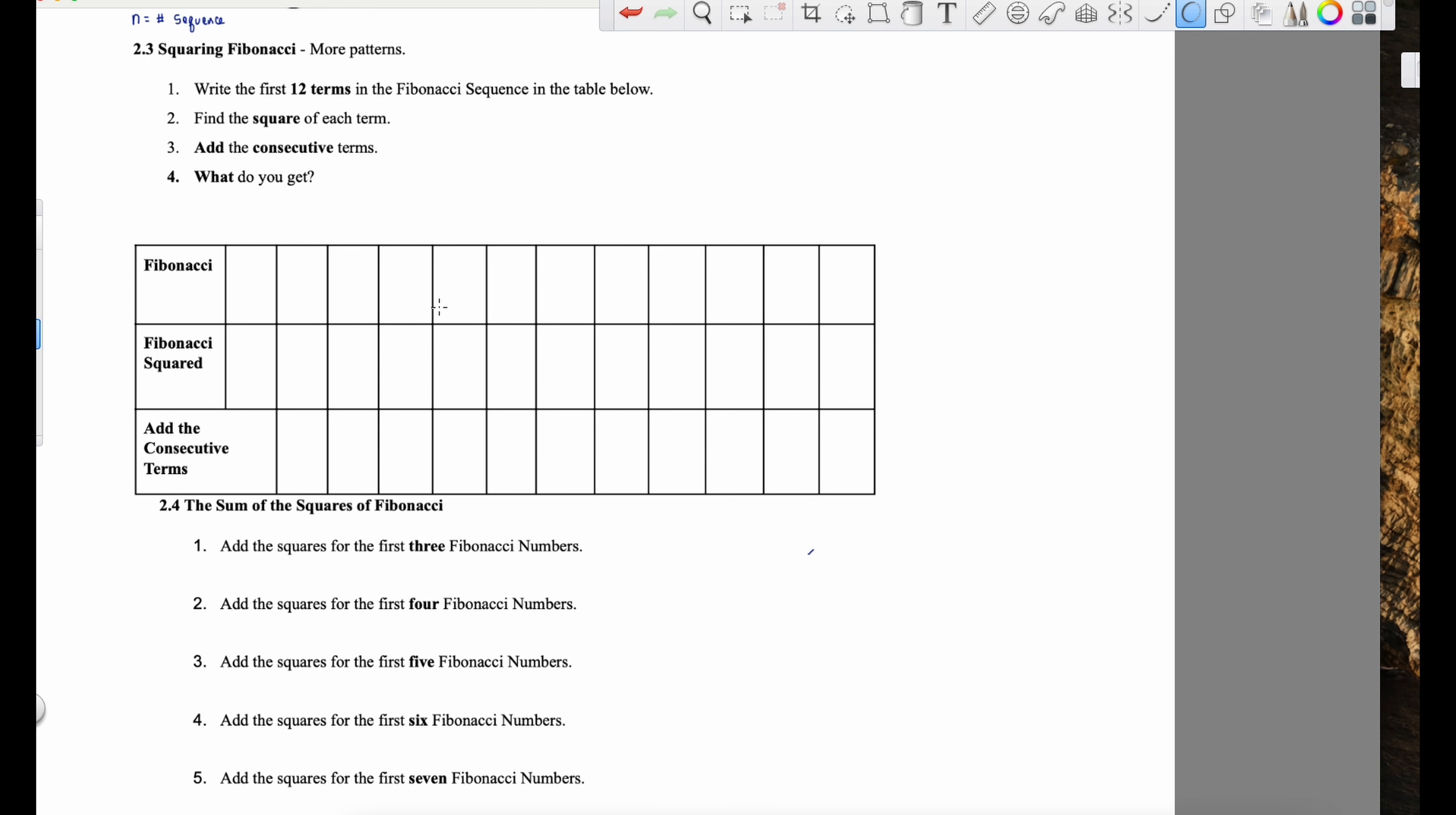Today in class we discussed the algebraic and numerical definition of the golden ratio or phi, and we discovered that it is 1.618. We did this algebraically, which you guys did a great job.